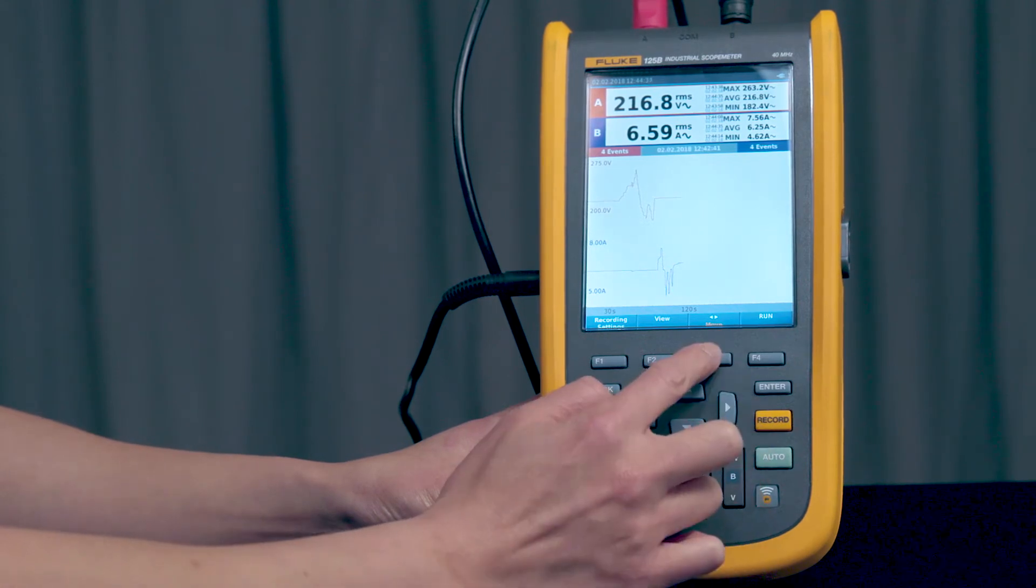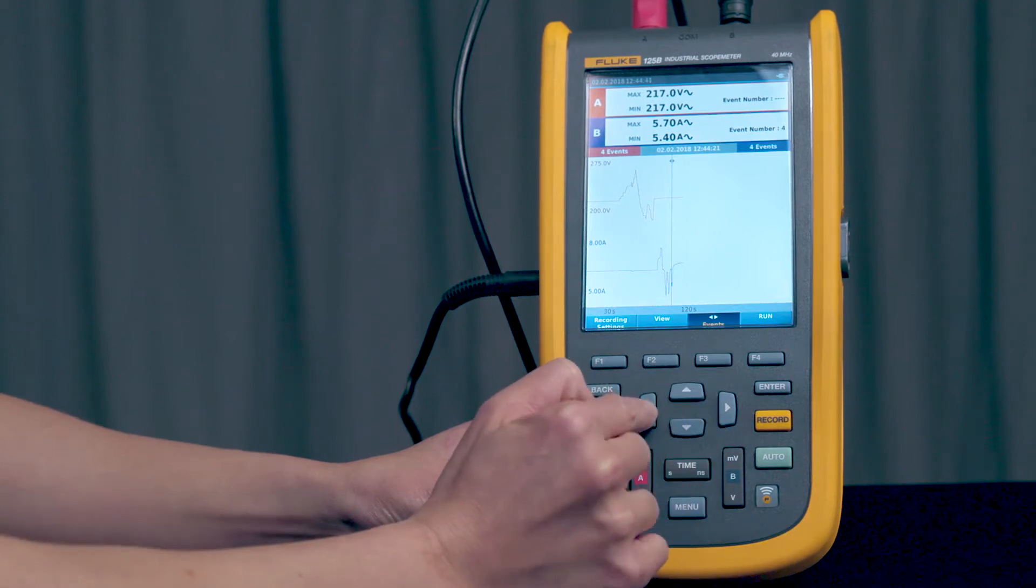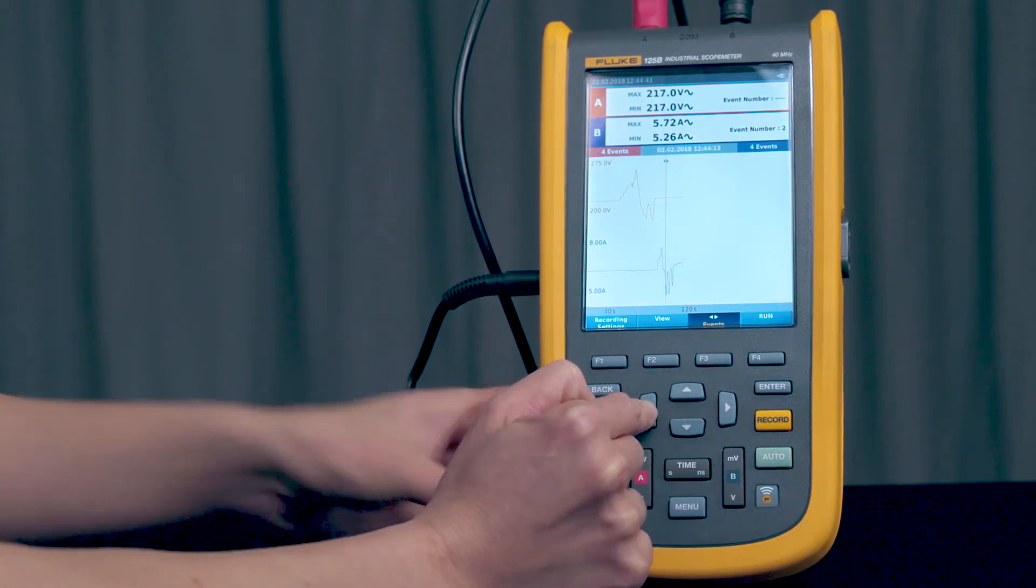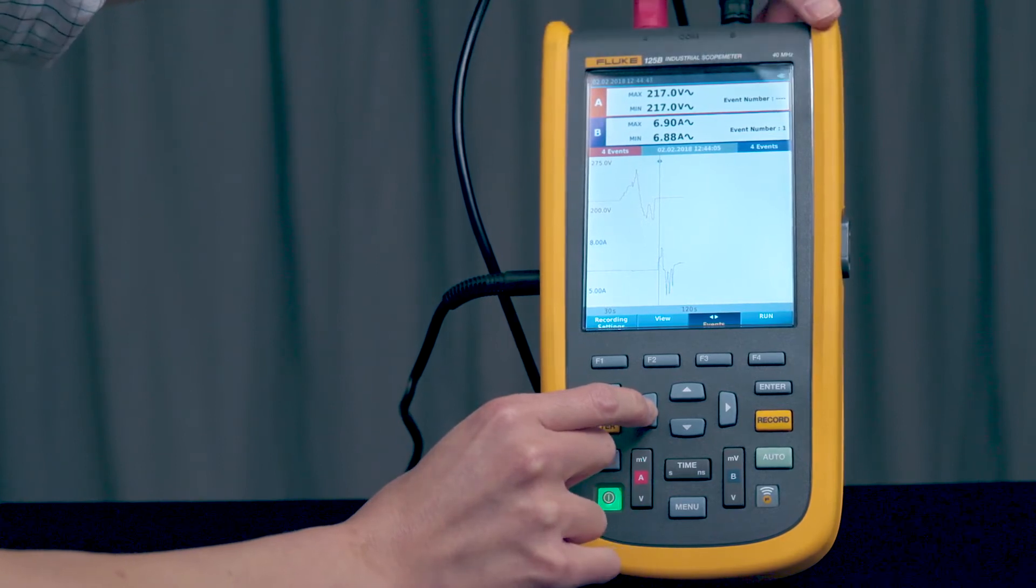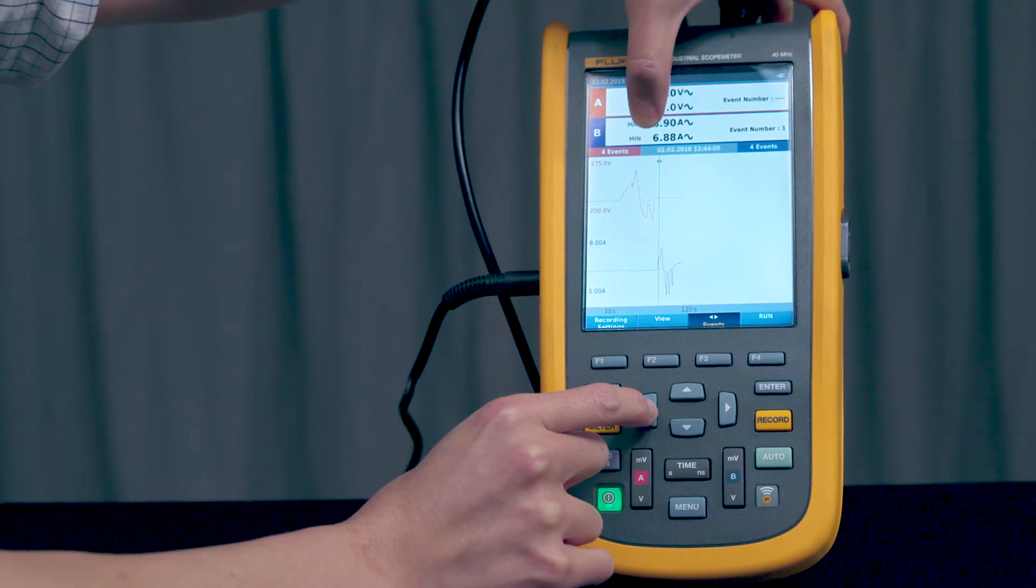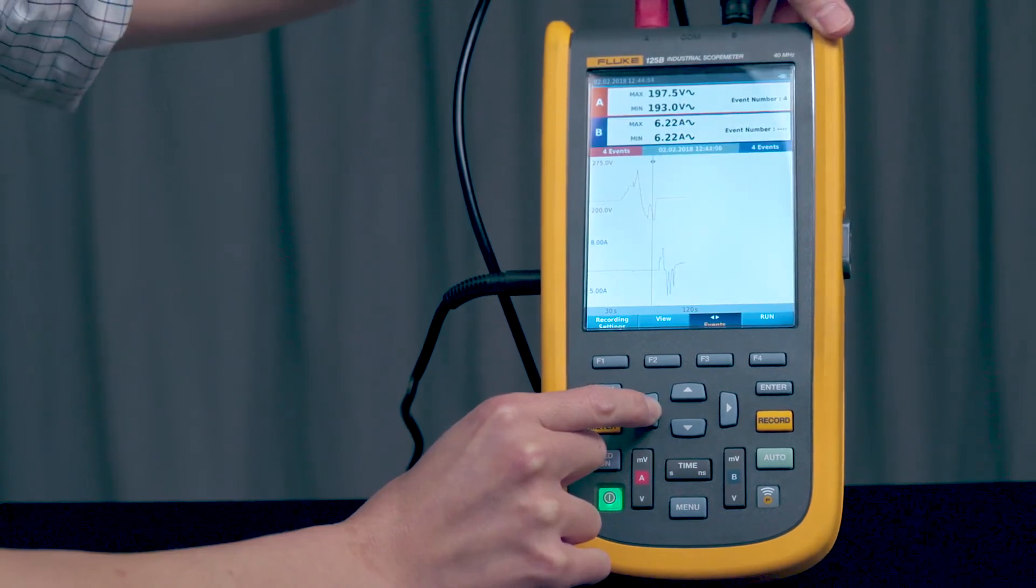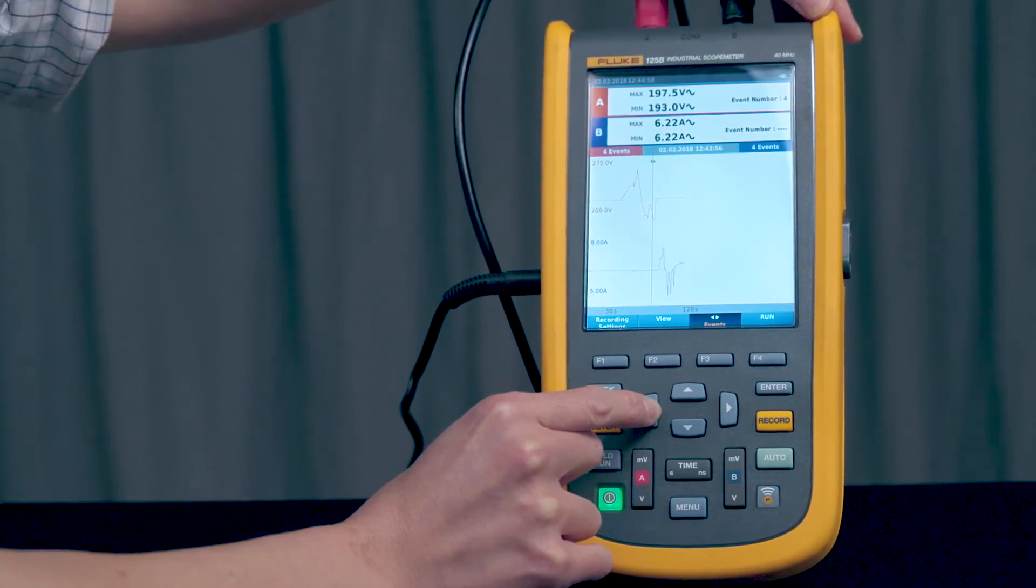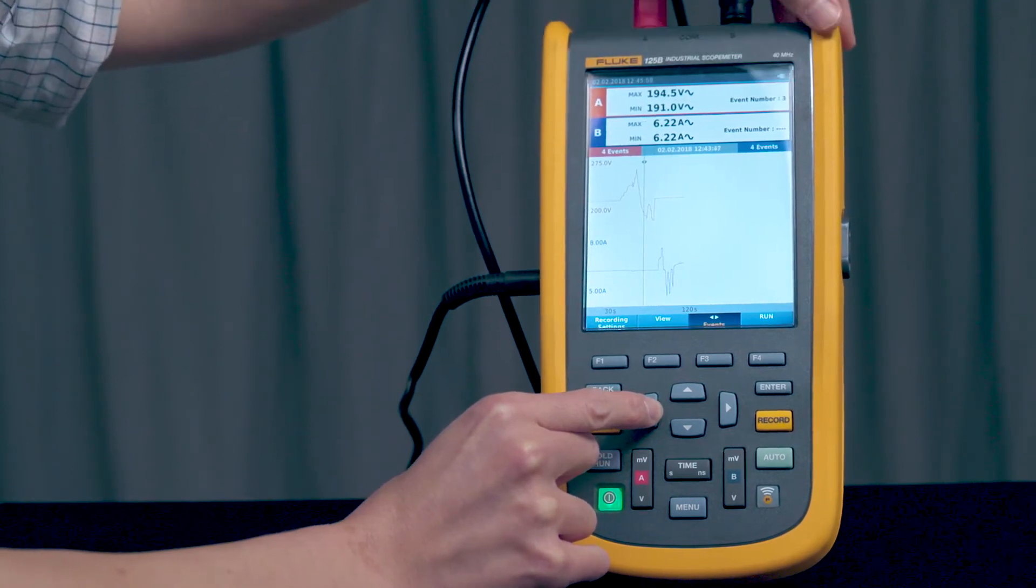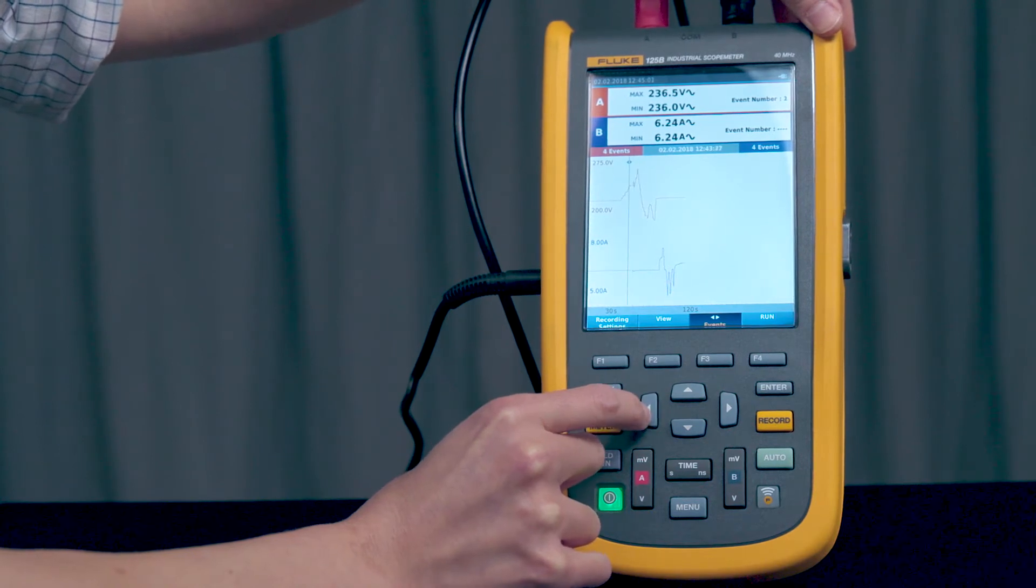Now you can press F3 to scroll through the different events. So right now you're on event number one. And event number one occurred for channel B right where this cursor happened. If we scroll through a little bit more, now we're on event number four of channel A. And we'll keep going back. Event three, two, one.